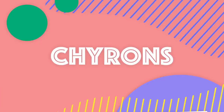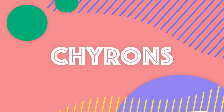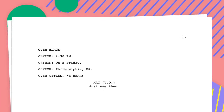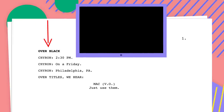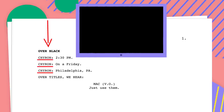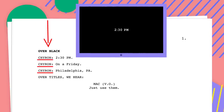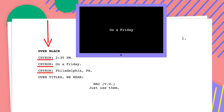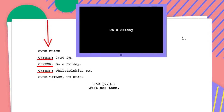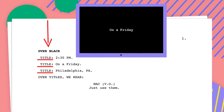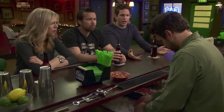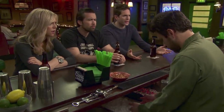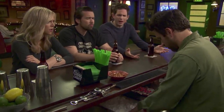Chirons are the text that appears over the screen. Under a scene heading, you start an action line with the word CHIRON in all caps and put the text after. Some screenwriters use the word TITLE instead.